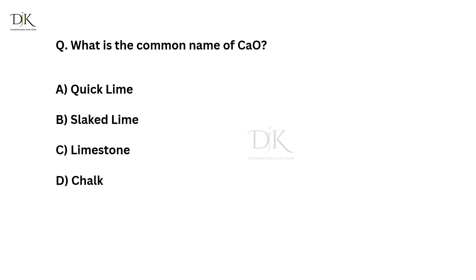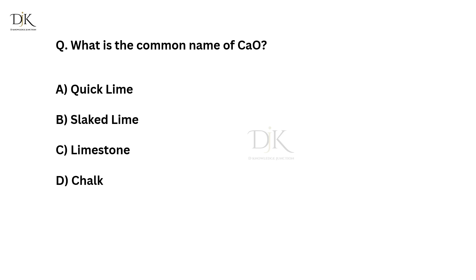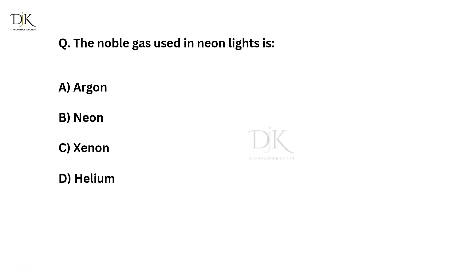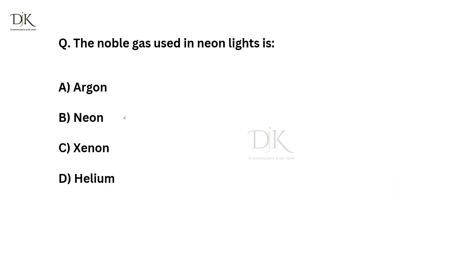What is the common name of CaO? The right answer is quicklime. The noble gas used in neon lights is? The right answer is neon.